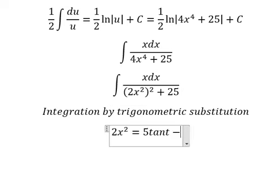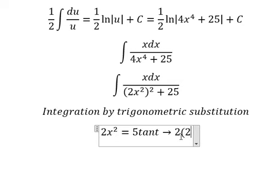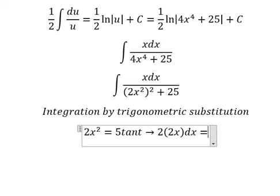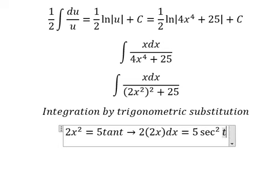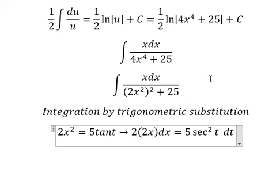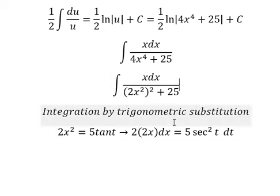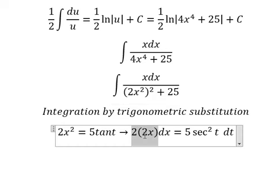Next, we take the first derivative of both sides. We get 2x on the left, and on the right we get secant squared(t) dt. Because we don't have the number four, we divide both sides by four.